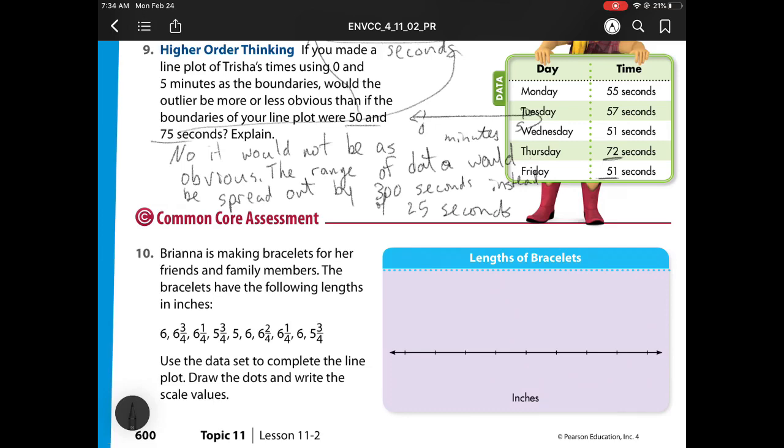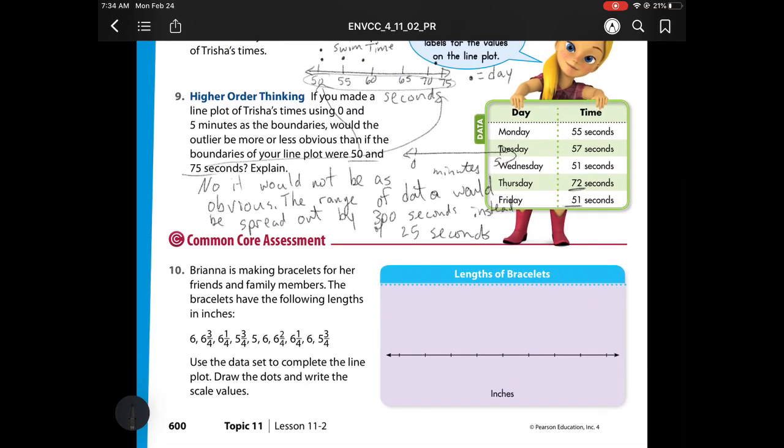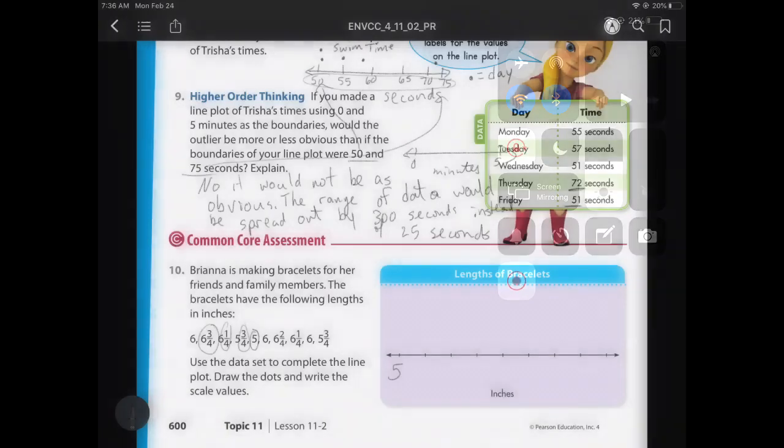Number 10. Brianna's making bracelets for her friends and family members. The bracelets have the following lengths: 6, 6 and 3 fourths, and so on. Use the data set to complete the line plot. Draw the dots and write the scale values. Well, let's find my lowest one. My lowest one is 5. And now my highest one is 6 and 3 fourths. So let's check to make sure that's going to work. I see I'm counting by fourths because I see a fourth in all of them.